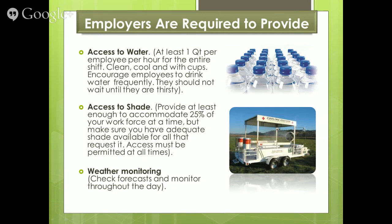Weather monitoring is the employer's responsibility. California weather can shift quickly — it might be 72 degrees all week and then jump to 85 or 88 degrees just a couple days later. Someone needs to be checking weather forecasts and monitoring the temperature throughout the day, since you may start work at 6 or 7 in the morning when it's cool, but by 10 or 11 o'clock that temperature is rising and you need to be ready with shade and water.